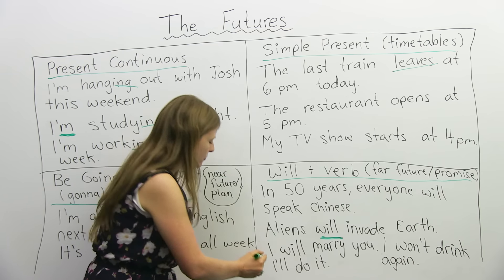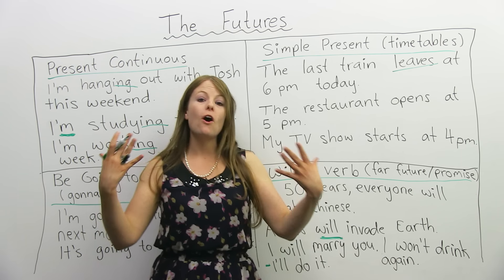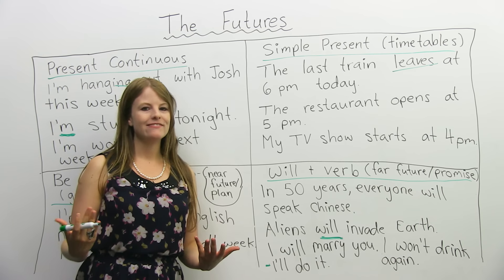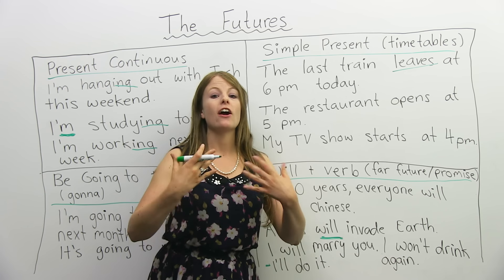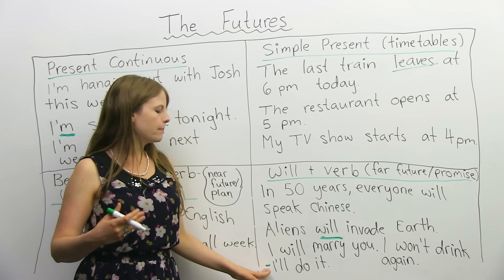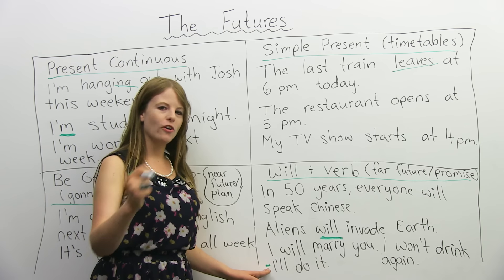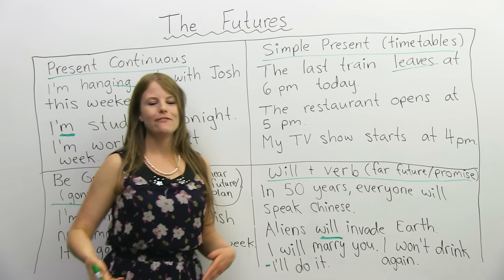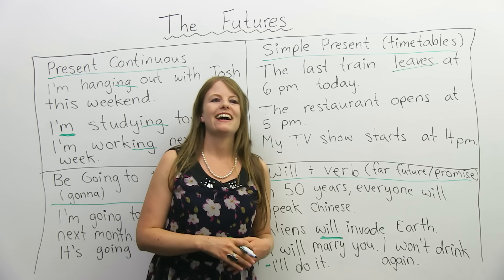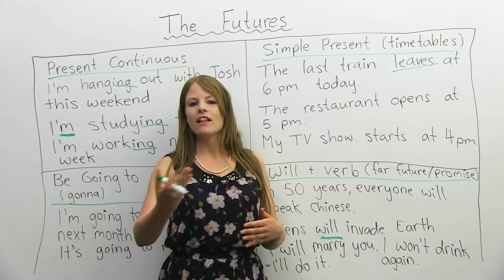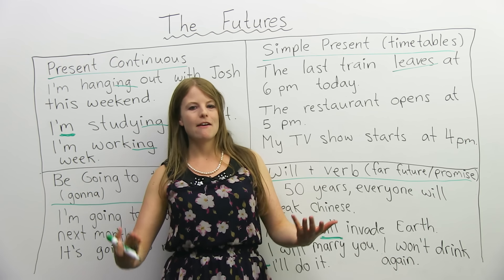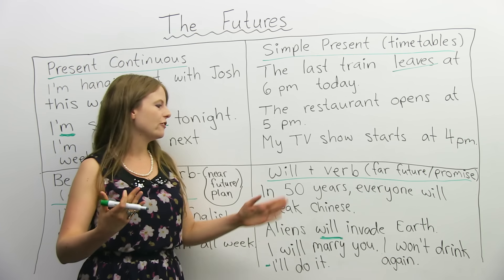Finally, we also use will for volunteering — when we want to offer our help. For example: 'Emma, can you clean the dishes?' 'I'll do it.' 'Emma, can you vacuum the floor?' 'Sure, I'll vacuum.' I'll get the telephone. I'll help you with your homework. I'll help you learn English. When I'm volunteering, I use will.